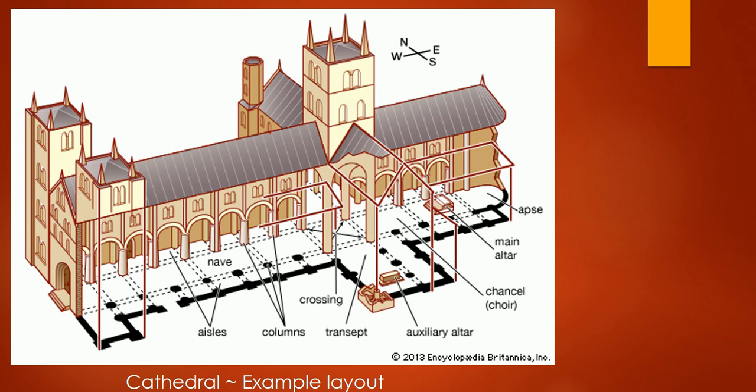Here you see, again, the apsidal form at the end, the altar that's inside of, what is this called? The choir, correct. You see the nave, the two side aisles, the transept, the crossing, the narthex up at the front.